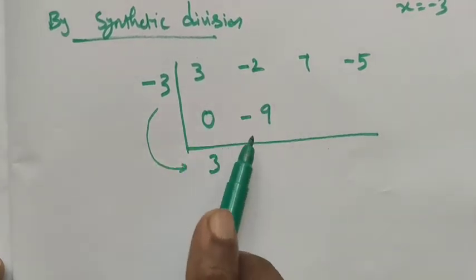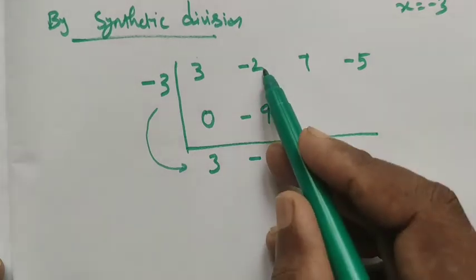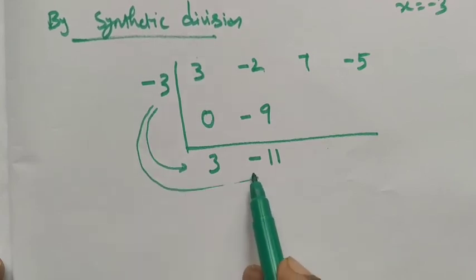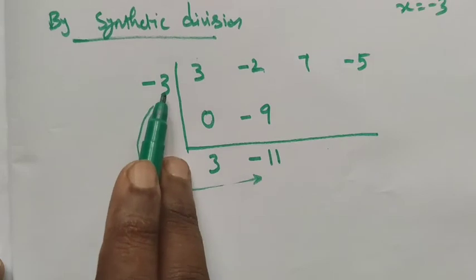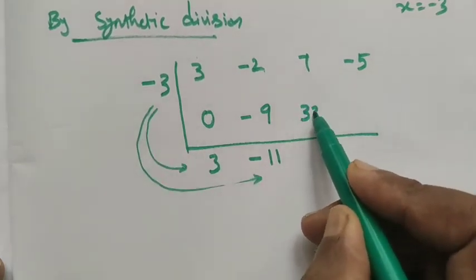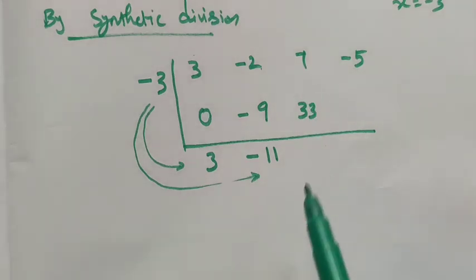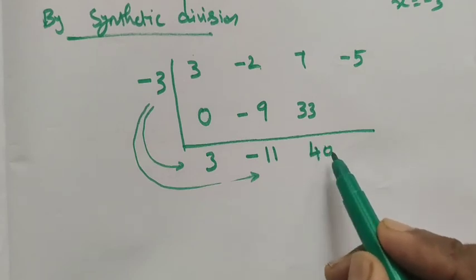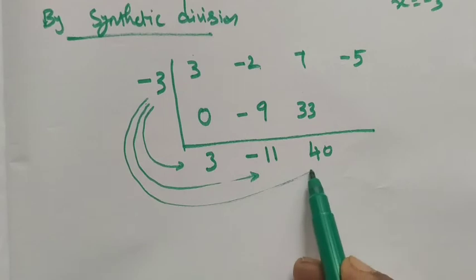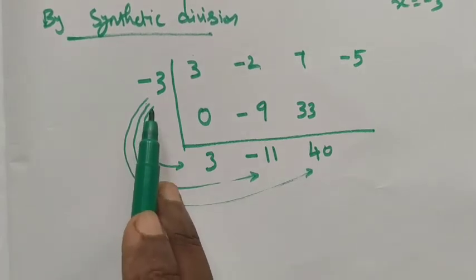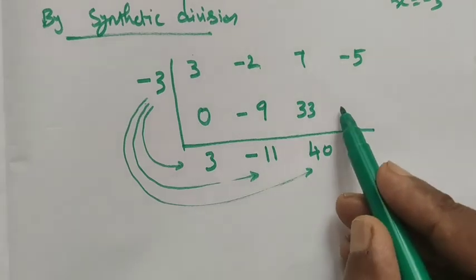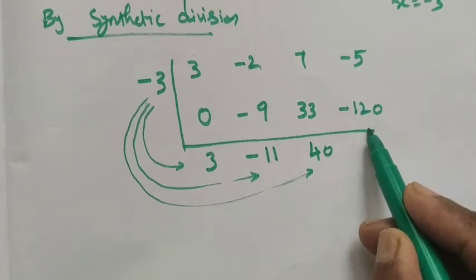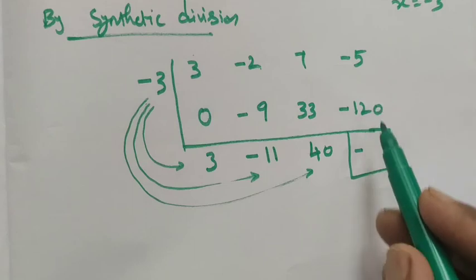Both have a negative symbol, so we add: -2 + (-9) = -11. Again multiply -3 × (-11) = +33. Add to the next coefficient: 33 + 7 = 40. Then multiply -3 × 40 = -120. Both are negative, so -5 + (-120) = -125.